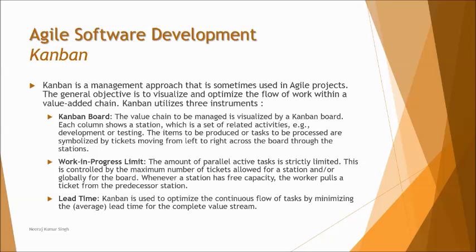Kanban is another unique agile approach with three key entities: Kanban board, work in progress limit, and lead time. The Kanban board showcases the monitoring process for ongoing activities, with four columns: to-do, in-progress, verify, and done. Tasks move from the first column to the last, and the board is transparent to all team members. Team members are self-oriented, deciding which job to take next without being directed.